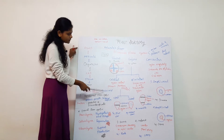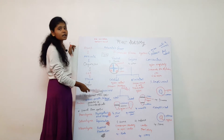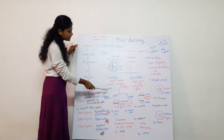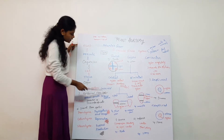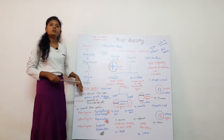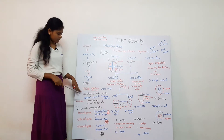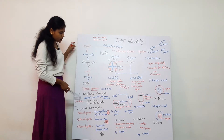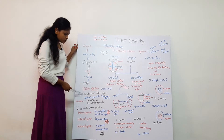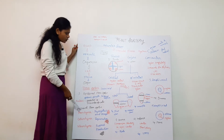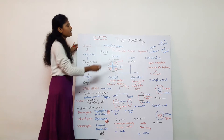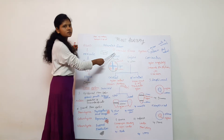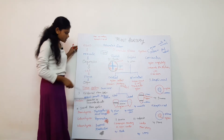Who classifies tissue systems? Sachs, in the year 1875. There are three tissue systems: the epidermal tissue system, the ground tissue system, and the vascular tissue system.